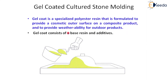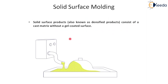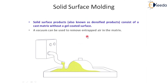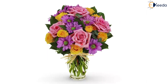In solid surface molding, the solid surface product consists of a cast matrix without a gel-coated surface. A vacuum can be used to remove entrapped air in the matrix, because any entrapped air will create problems and may cause surface failure. Solid surface products offer limitless design styles and many advantages. This is all about the various processing methods of composite materials.